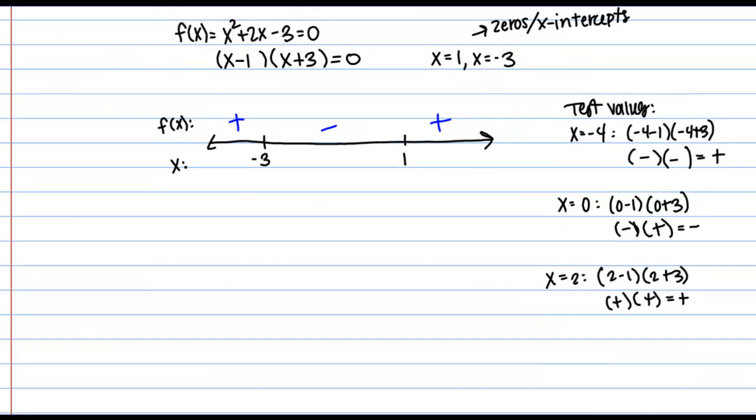So then let's make some conclusions. So we can say f(x) is positive on the intervals from negative infinity to -3, union 1 to infinity. Notice that I'm not actually including -3 and 1 in my intervals. I'm using parentheses here. At those values the function is 0. So it's not positive.